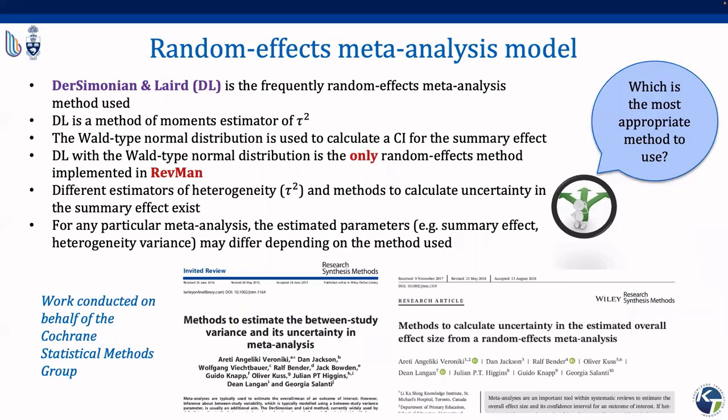The DerSimonian and Laird is the most frequently used random effects meta-analysis method. The Wald-type Z-test confidence interval using the DerSimonian and Laird estimator for between-study variance are commonly used and are the default options in many meta-analysis software and the only random effects method in REVMAN. The DL heterogeneity estimator is a method of moments estimator using the Cochran Q statistic, and the Wald-type CI is based on the normal distribution. However, these methods may be misleading, particularly in small meta-analyses, and alternative methods with better performance have been suggested.